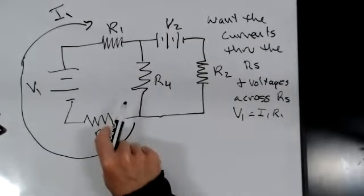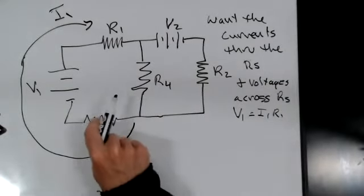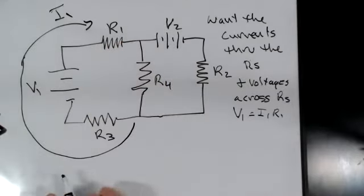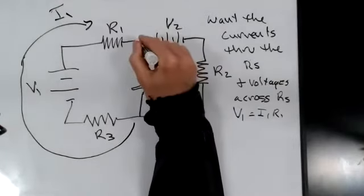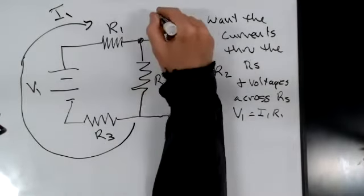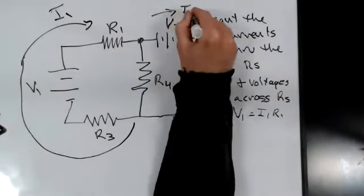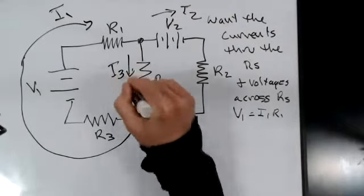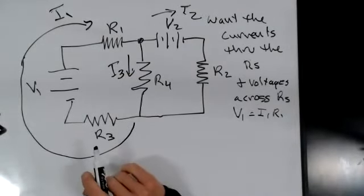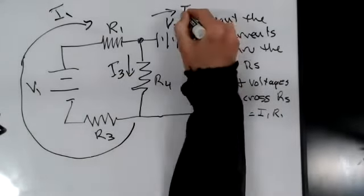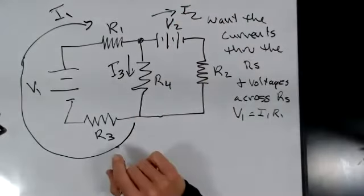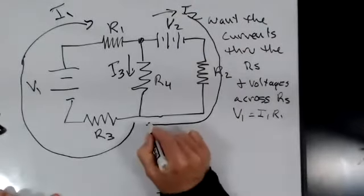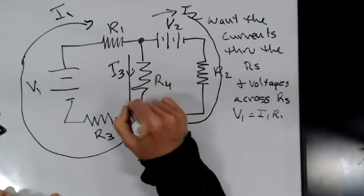If this is a plumbing system, every drop of water that goes through this section of pipe goes through this one and this one. When the current gets to this junction, it can go either this way — which we'll call I2 — or this way, which we'll call I3. I2 goes all the way around to here, and I3 goes all the way across here.